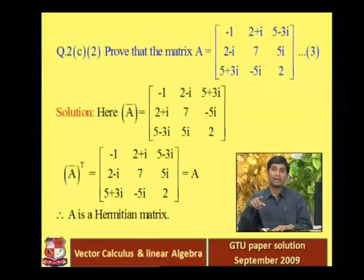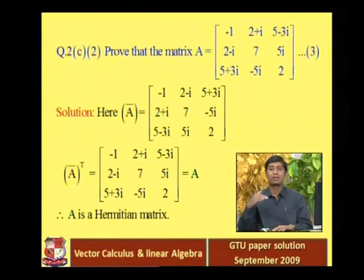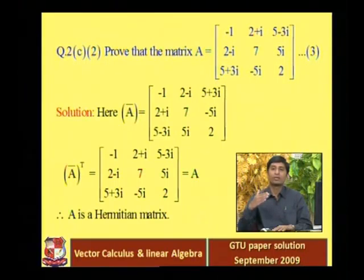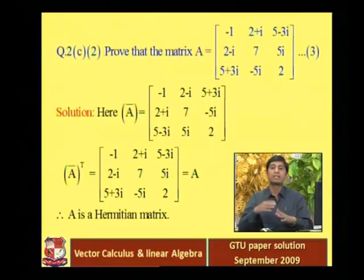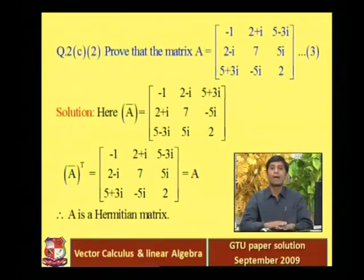That result is called A-star — the transpose of the conjugate, or equivalently the conjugate of the transpose; both are the same. If A-star equals A, then the matrix is a Hermitian matrix. If A-star equals minus A, then A is a skew-Hermitian matrix.